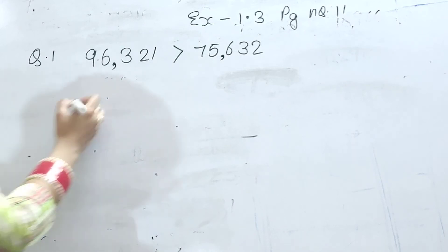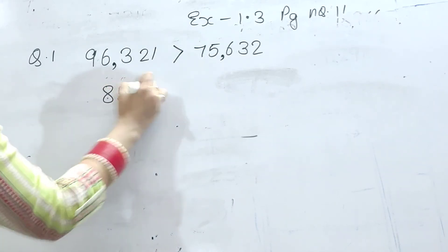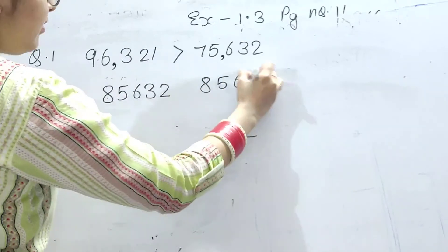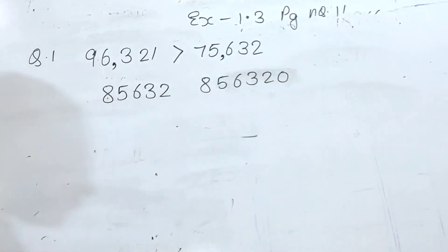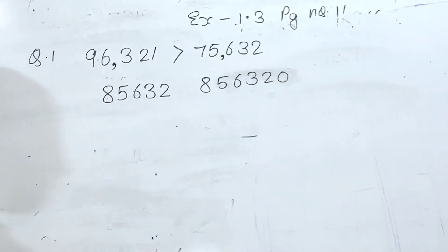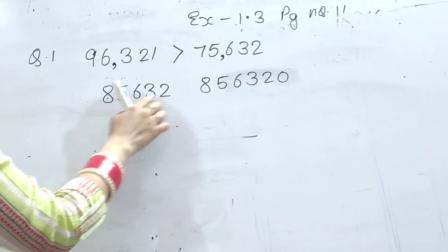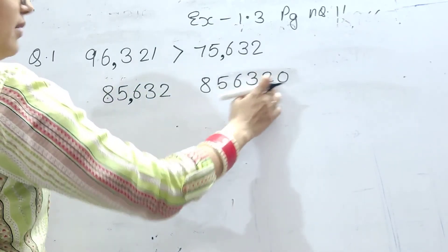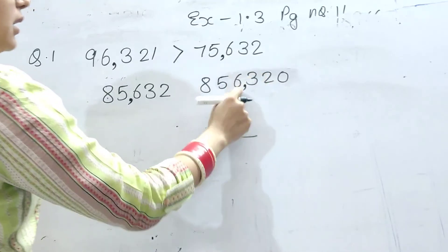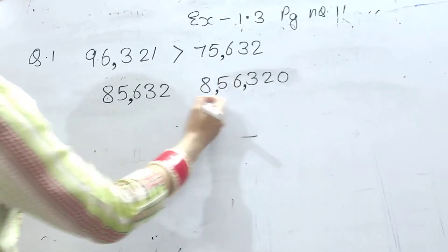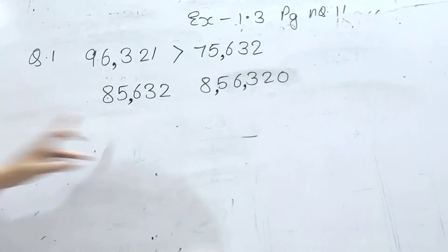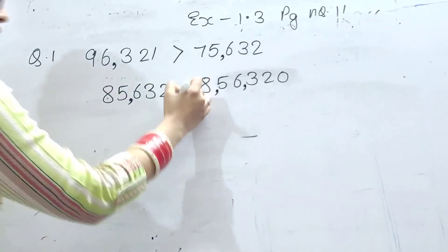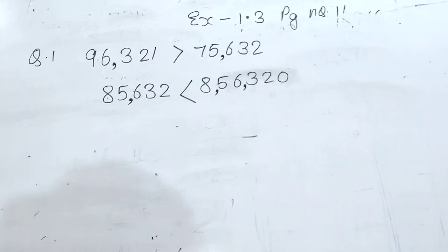Same way: 85,632 and 8,56,320. Pehle hume periods mark karenge. Ones, tens, hundreds, thousands, ten thousands. Then: ones, tens, hundreds, thousands, ten thousands, and lakh. Ab in dono me se kaun sa number bada hai? 8,56,320.